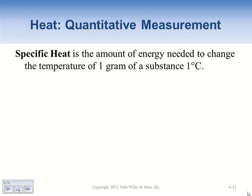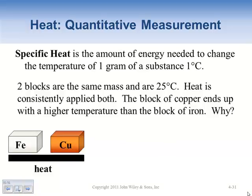The specific heat of a substance is the amount of energy needed to change the temperature of one gram of that substance by one degree Celsius. Here we have two blocks of the same mass, both heated starting at 25 degrees Celsius with heat consistently applied. The block of copper ends up at a higher temperature than the block of iron. Why does one block heat up differently than another?